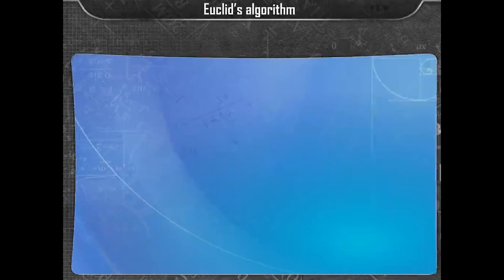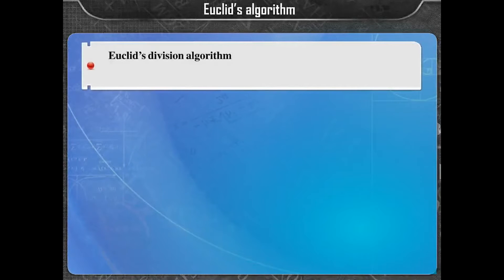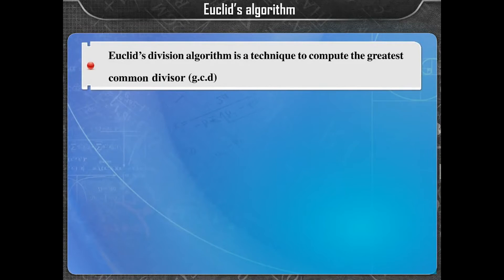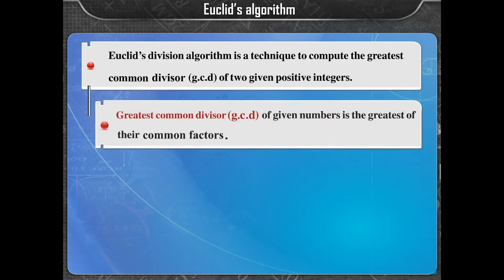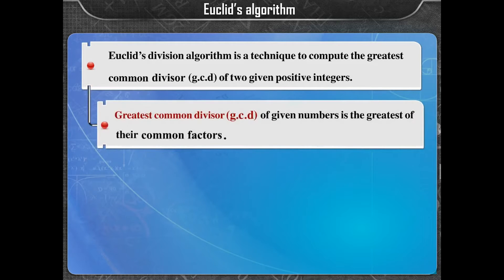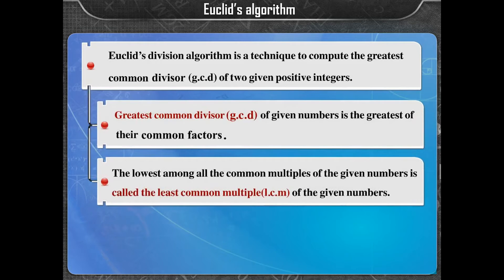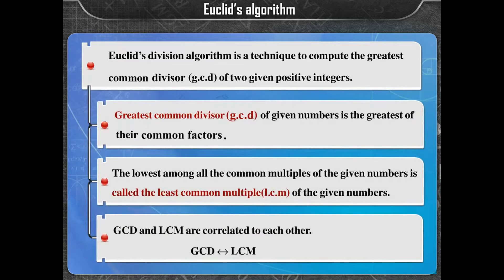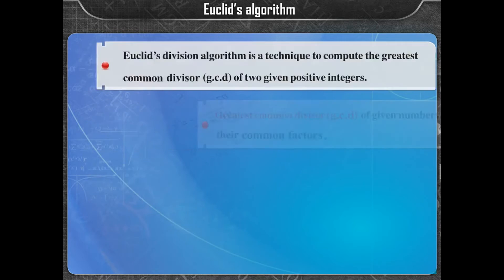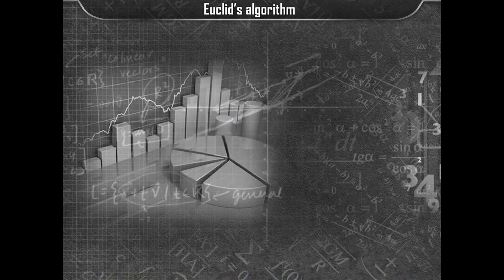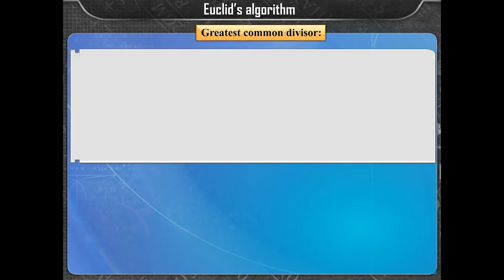Euclid's division algorithm is a technique to compute the greatest common divisor (GCD) of two given positive integers. GCD and LCM are correlated to each other.